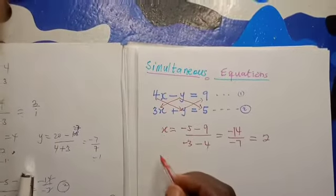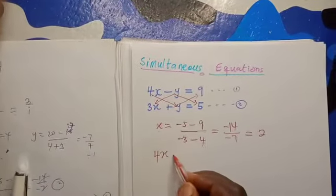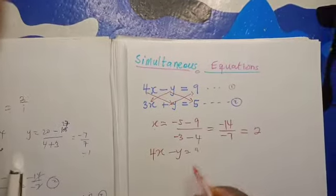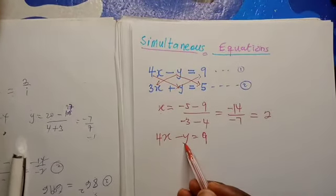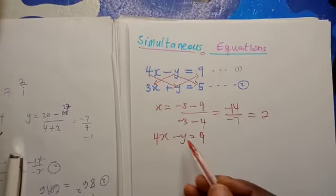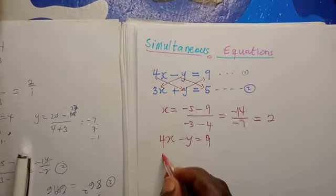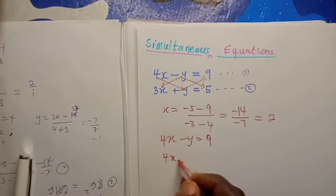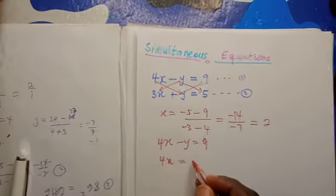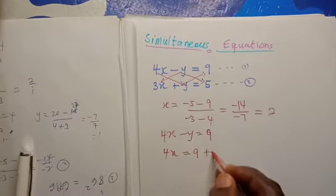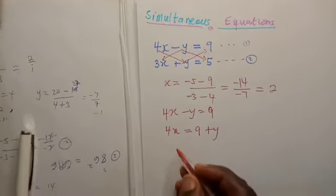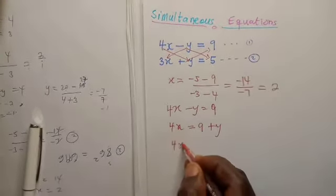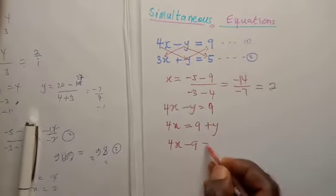If we take equation 1, 4x minus y equals 9, we can send the y to the other side by adding y to both sides. That becomes 4x equals 9 plus y. Now we subtract 9 from both sides to get 4x minus 9 equals y.